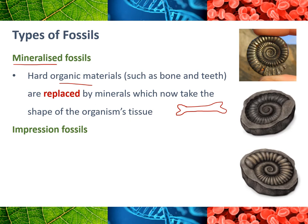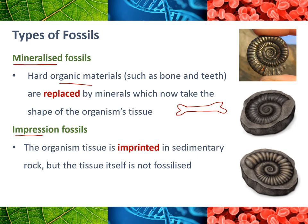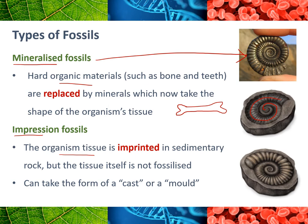Another type is called an impression fossil — if you think about what it means to take an impression of something, it's almost like a stamp. The organism tissue is imprinted into sedimentary rock but the tissue itself doesn't become fossilized. Looking at this top picture, that's a great example of a mineralized fossil — it has completely taken the organism's form. In an impression fossil, the dead organism basically imprinted into the rock. These can take two different forms: a mold or a cast. A mold is when the imprint goes inwards, and a cast is when another layer of rock forms over that mold.